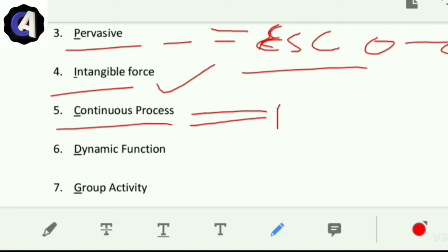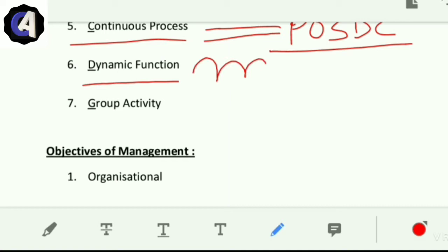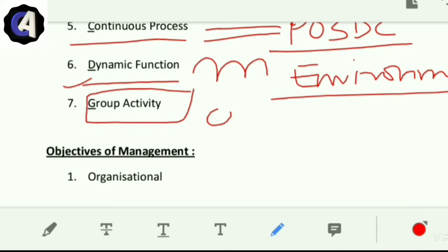Continuous process - we always have to keep doing management. The five functions of management - planning, organizing, staffing, directing, and controlling - you have to keep doing them always. Dynamic function - why is it dynamic? It is a changing function because the environment is dynamic. Changes keep coming, so you have to keep changing management techniques. That is why it is a dynamic function.